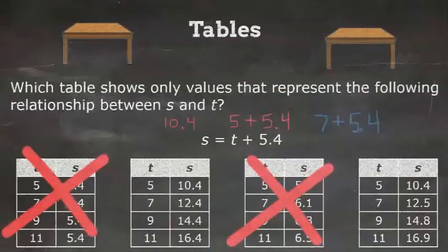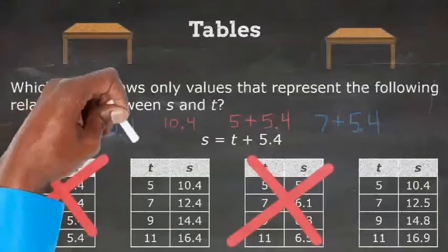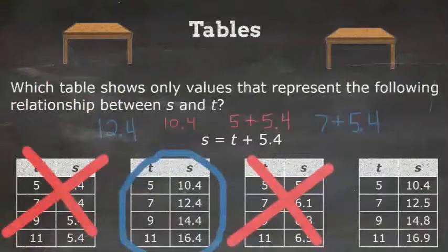Now, let's plug in 7. 7 plus 5.4 equals 12.4. That means this one is our answer. For every t, the table adds 5.4 to get the s value.